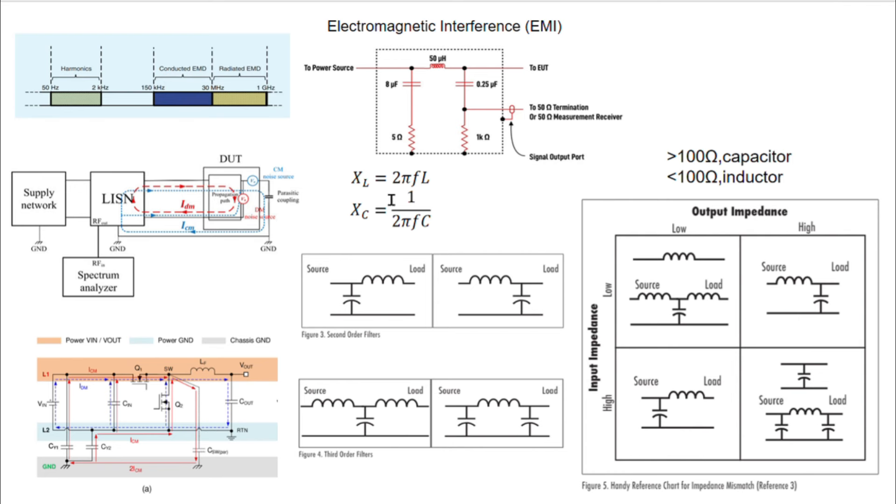The simplest type is called a first-order filter, consisting of just a simple passive component. Capacitors shunt noise current away from a load, while inductors block or reduce the noise. Generally, these single component filters have small attenuation.